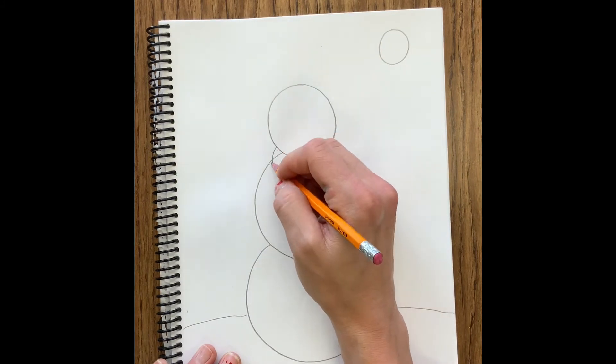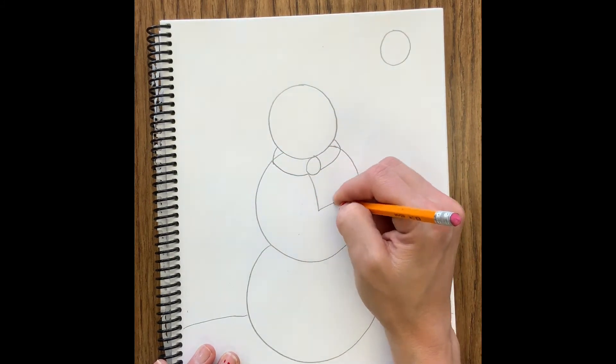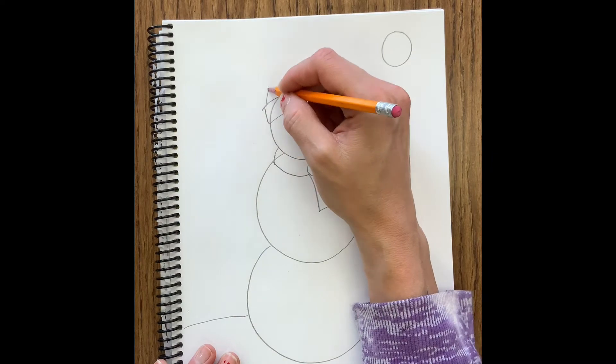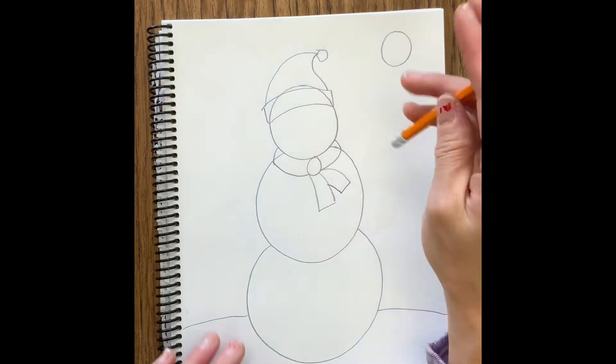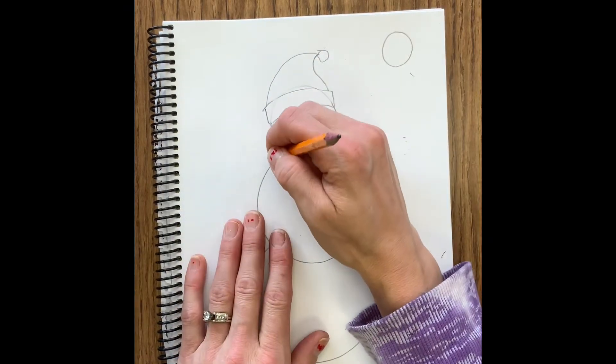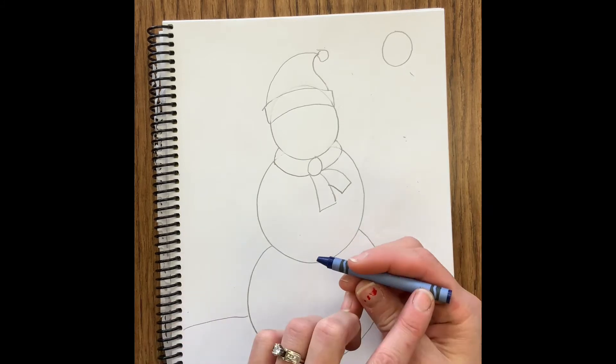Now is the time to add extra details. If you want to add a scarf and a hat you can add the face in now too if you want, or we can add that after we do our shading. But you can go ahead and draw those things in with a pencil now.